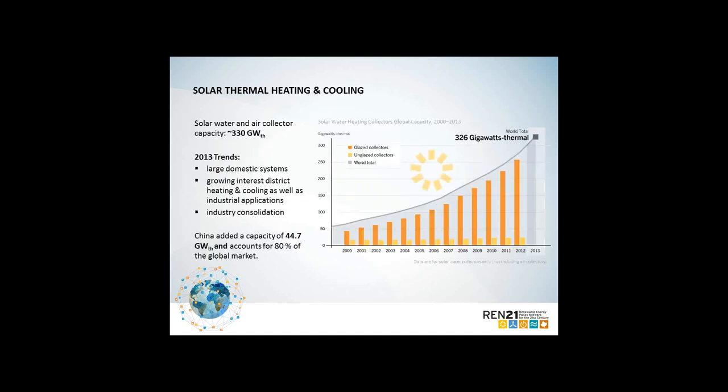Solar heating and thermal is of particular interest in the Africa region. Solar water and air collector capacity exceeded 280 gigawatts in 2012 and reached an estimated 330 gigawatts by end of 2013. China was the main demand driver, accounting for more than 80% of the global market. Demand in key European markets continued to slow, but markets expanded in countries such as Brazil, where solar thermal heating is cost competitive. The trend toward deploying large domestic systems continued, as did growing interest in thermal technologies for district heating, cooling, and industrial applications.